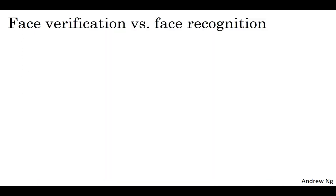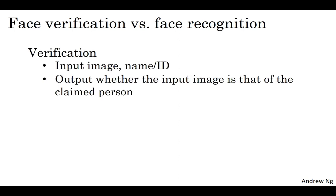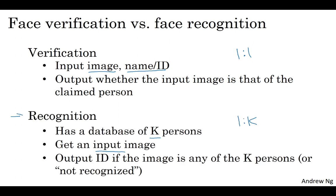First, let's start by going over some of the terminology used in face recognition. In the face recognition literature, people often talk about face verification and face recognition. The face verification problem is: given an input image as well as a name or ID of a person, the job of the system is to verify whether or not the input image is that of the claimed person. Sometimes this is also called a one-to-one problem, where you just want to know if the person is who they claim to be.